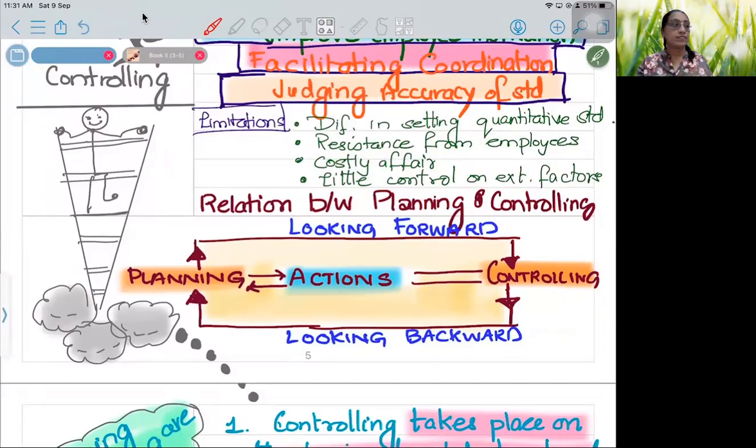And the main function of controlling is that the standard that you have set would be measured. Maybe you have set a target of hundred units for one day. At the end, when you check and you see that yes, hundred units are made, then there's accuracy. But if hundred units became 110, or 97, it is okay. But if instead of hundred, only 70 are made, that means something is wrong. Maybe the raw material finished, power went out, machines broke down. And you have to immediately take up the measures for that.